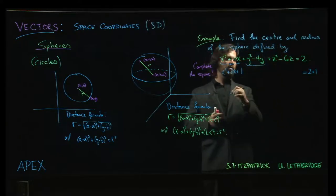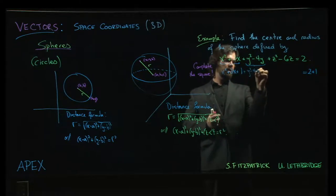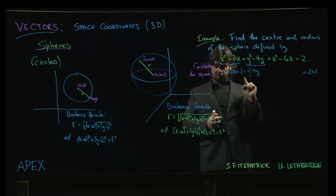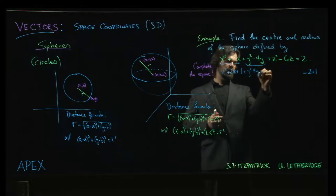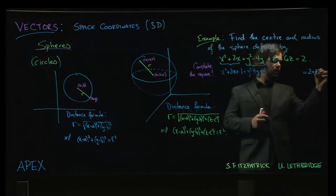And now when I look at y squared minus 4y, I should do y squared minus 4y. Half of minus 4 is minus 2. If I square that I get plus 4. If I add 4 on one side, I should add it on the other side.